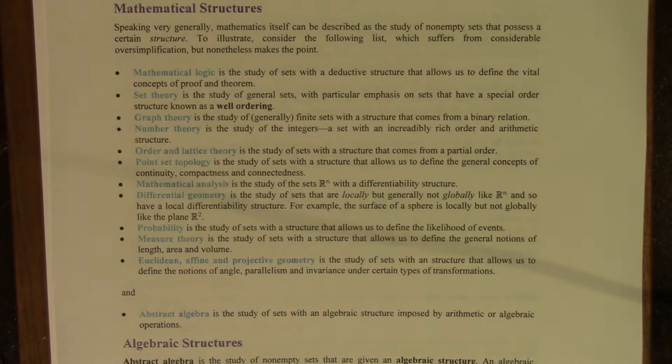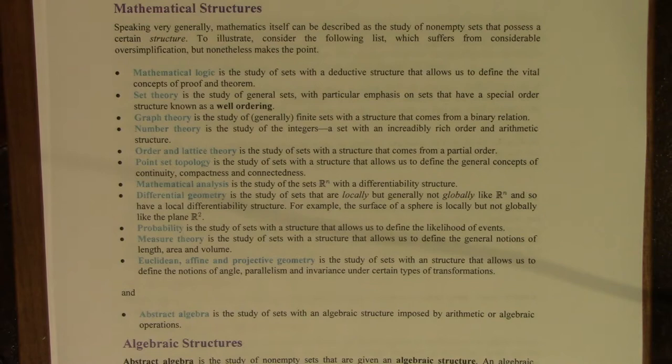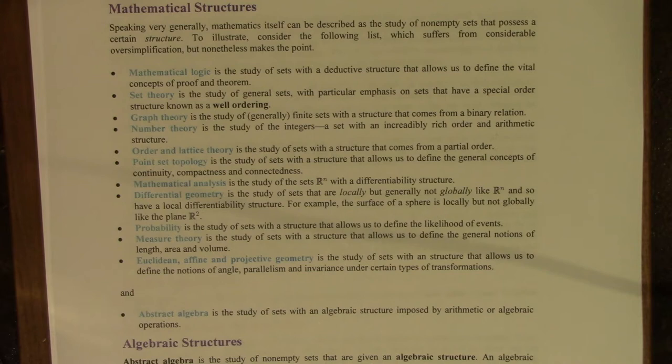Point set topology is the study of sets with a structure that allows us to define the general concepts of continuity — with which you are probably familiar from calculus — compactness, and connectedness. Mathematical analysis is the study of the sets R^n, the Euclidean space, with a differentiability structure. Differential geometry is the study of sets that are locally, but generally not globally, like R^n, and so have a local differentiability structure.